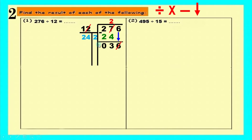Thirty-six is bigger than twelve, so we cover units with units, left with one. Three divided by one equals three. We try three in the margin: three times two equals six, three times one equals three — giving thirty-six, the same number we have. So three works. We write it above, write its answer below, draw a line and minus. Six minus six equals zero, three minus three equals zero. So the quotient is twenty-three.